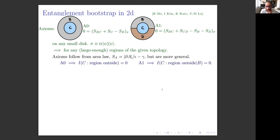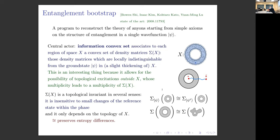Question: When you say entropy difference, do you mean the entropy of a ball-shaped region and then the entropy of the same region translated around the annulus? No—I mean the entropy of two different states on the annulus. The entropy of two different states on the deformed annulus. That's the sense in which it's a topological invariant.